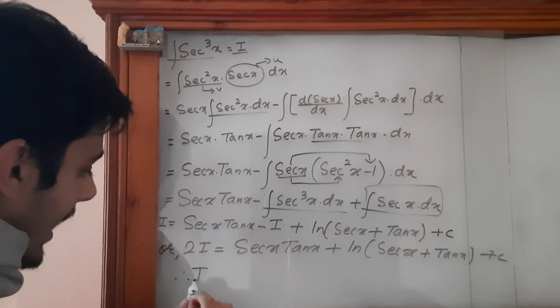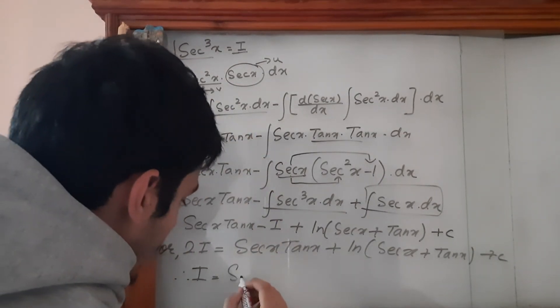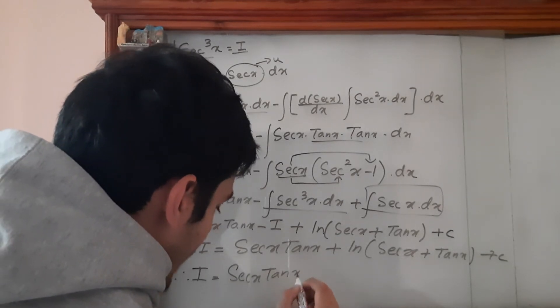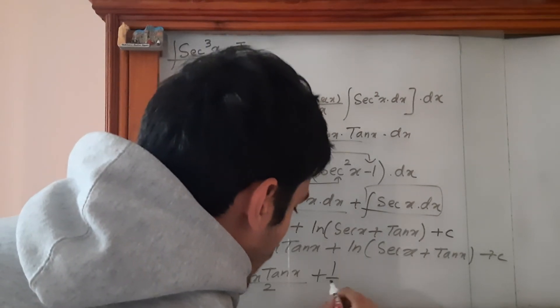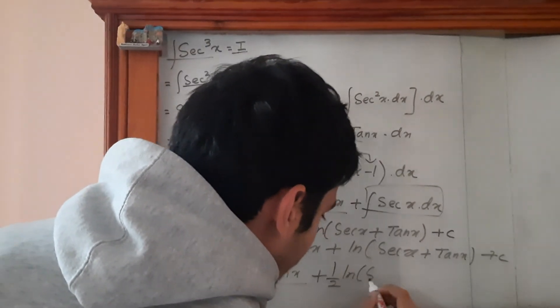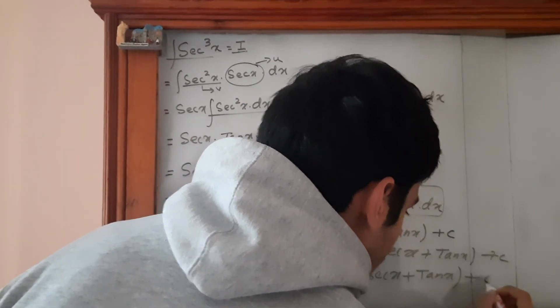Therefore I, which is the integration of sec³x, equals (secx·tanx)/2 + (1/2)ln(secx + tanx) + c.